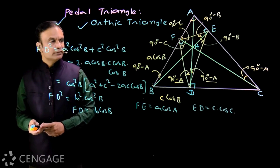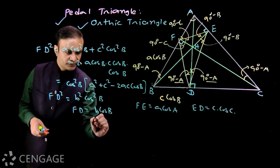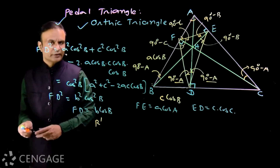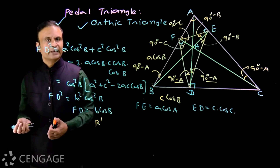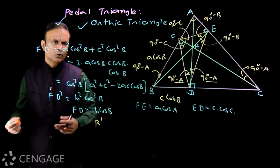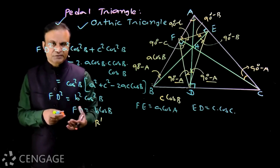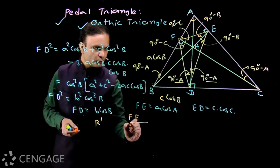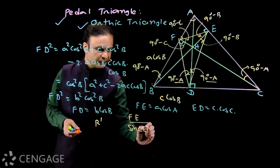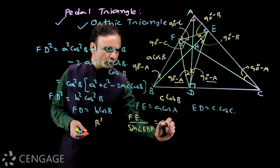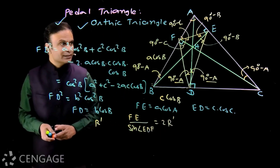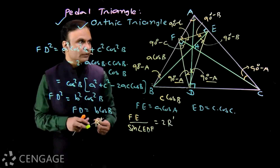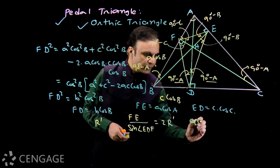Now let's find the circumradius of the pedal triangle. Let the circumradius be R'. To find the circumradius we need one side and its opposite angle. Using the sine rule in triangle DEF: FE / sin(∠EDF) = 2R'. The length FE = A cos A, and angle EDF = 180° − 2A.